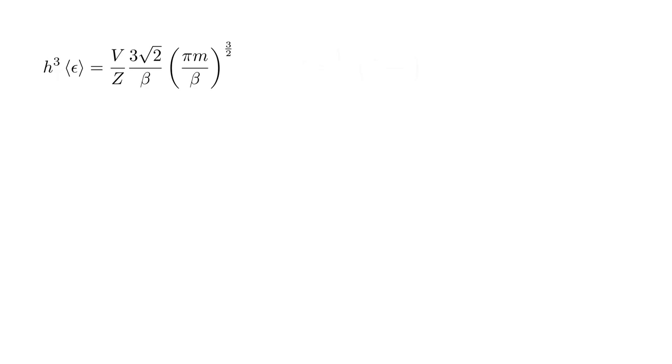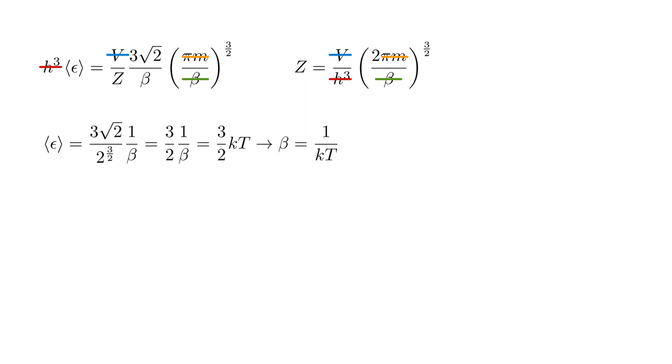When we divide by Z on the right, this will bring a factor of h cubed into the numerator, which cancels the h cubed on the left. The V factors cancel, as do factors of pi m to the three-halves and beta to the three-halves. This leaves the average energy of an atom equals three square root two over two to the three-halves power times one over beta. This reduces to three halves one over beta. Setting this equal to three halves kT, we find beta equals one over kT.